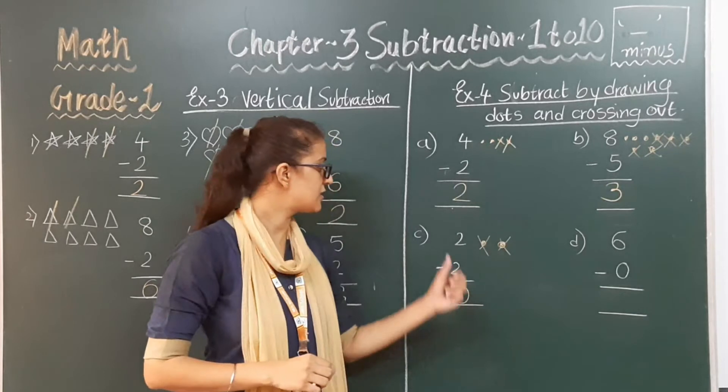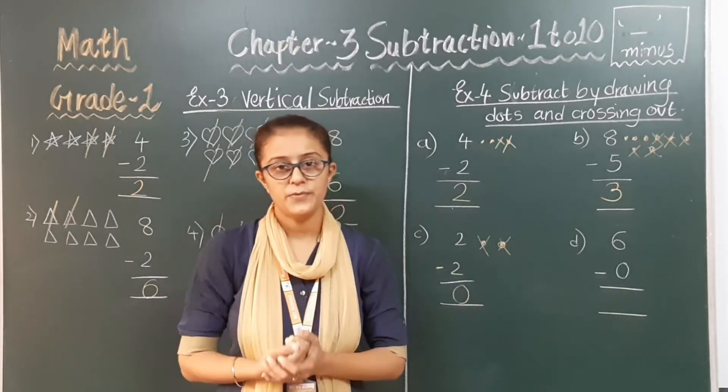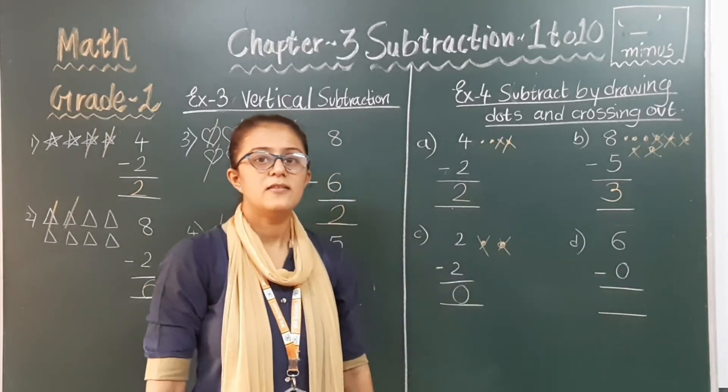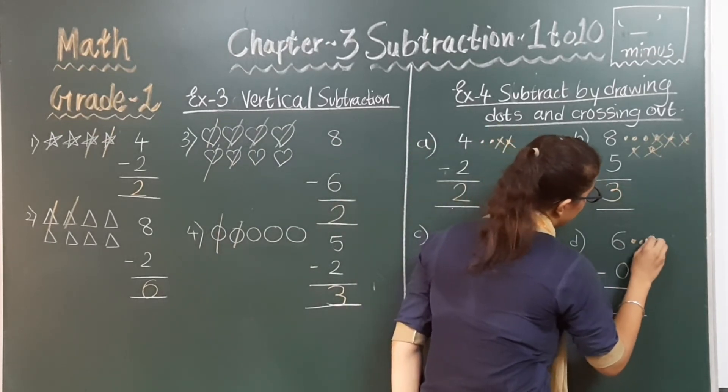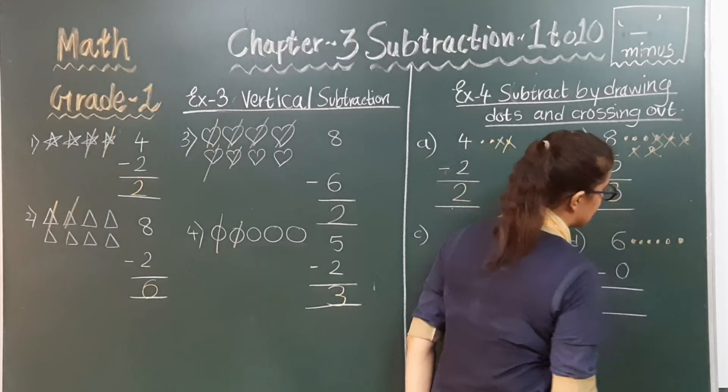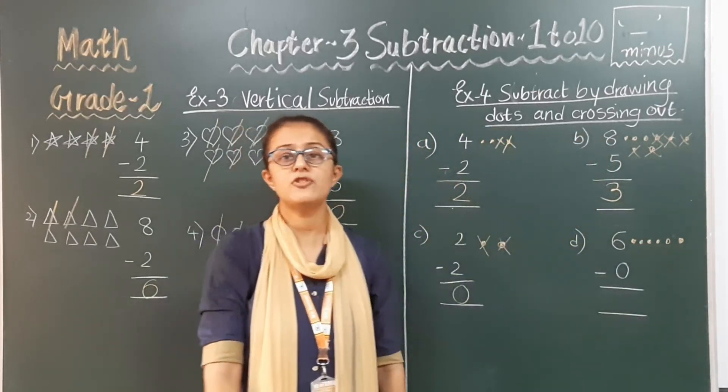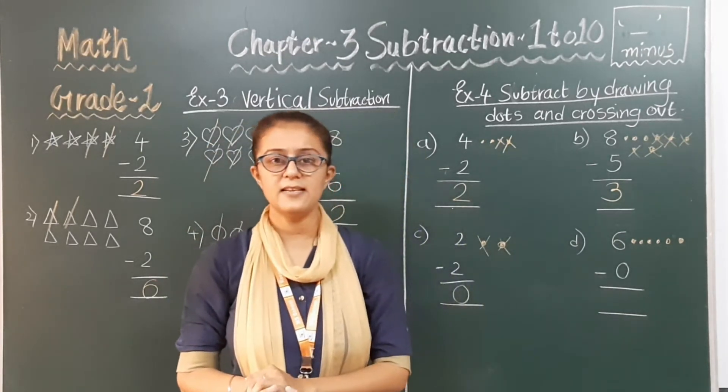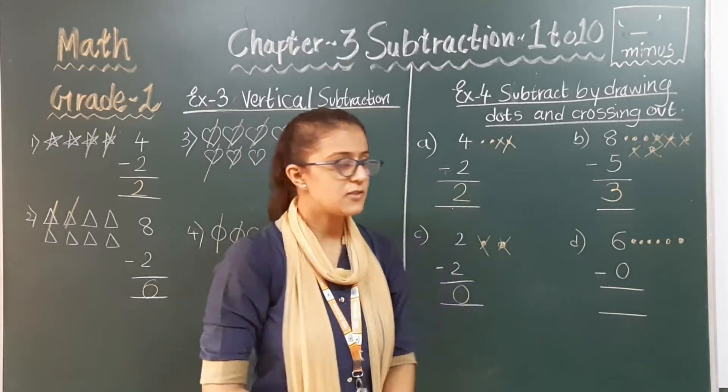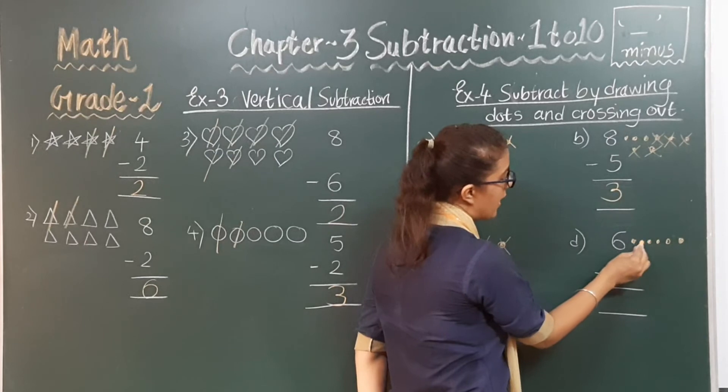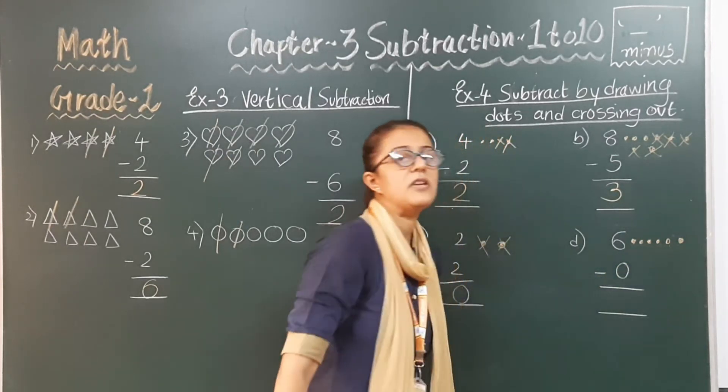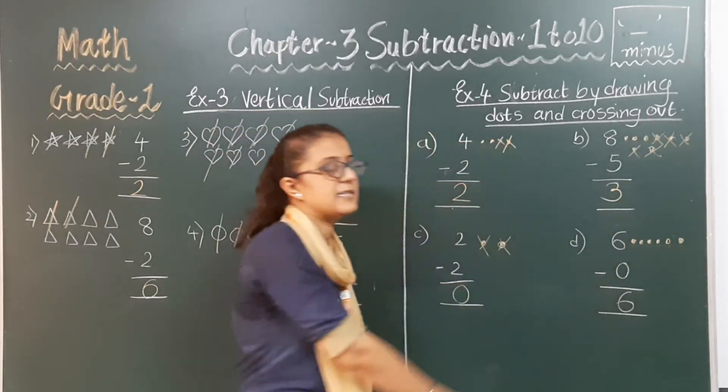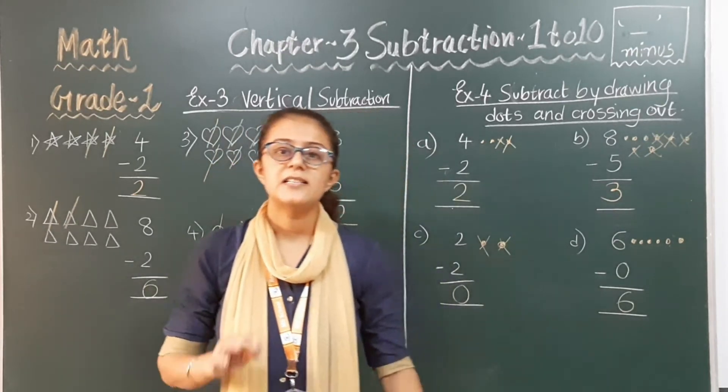Yes students, when we minus 2 from 2 we get 0. Next, 6 minus 0. So let's see. First of all 6 dots. One, two, three, four, five and six. So from this 6 dots we have to minus 0. Yes, nothing. So we will not minus anything. So count it, how much is left now? One, two, three, four, five and six. We have minus nothing, 0 is nothing. So we have to write here number 6 only. 6 minus 0, that is 6 only.